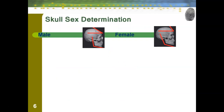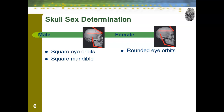When determining the sex of a skeleton, there are two biological sexes: male and female. Male skulls have square eye orbits — the hole in your skull where your eye is held — while females tend to have more rounded eye orbits. Males also have a square mandible, the lower part of the jaw, while women tend to have more of a V-shaped mandible, which gives women a more feminine, delicate-looking face. This is why men are often described as having strong chins.